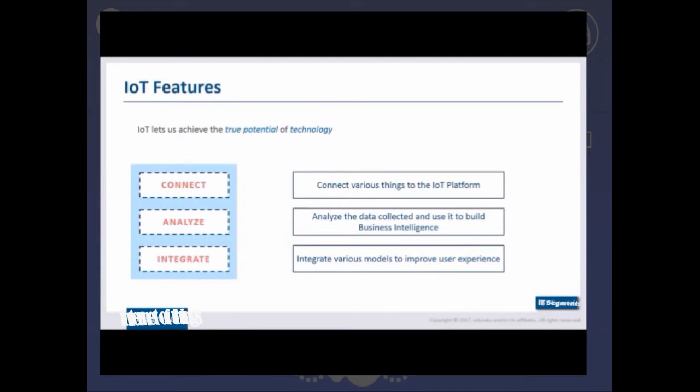There are mainly three aspects to Internet of Things as to how it works. First is the connect aspect. Here you need to ensure there's connectivity between all the things around you to the IoT platform.